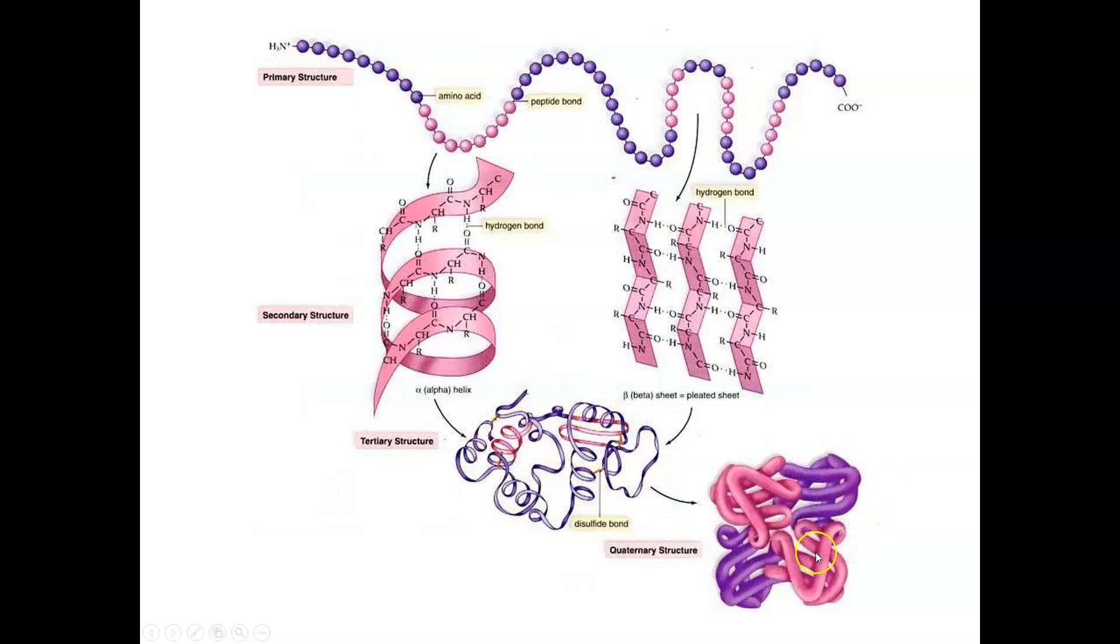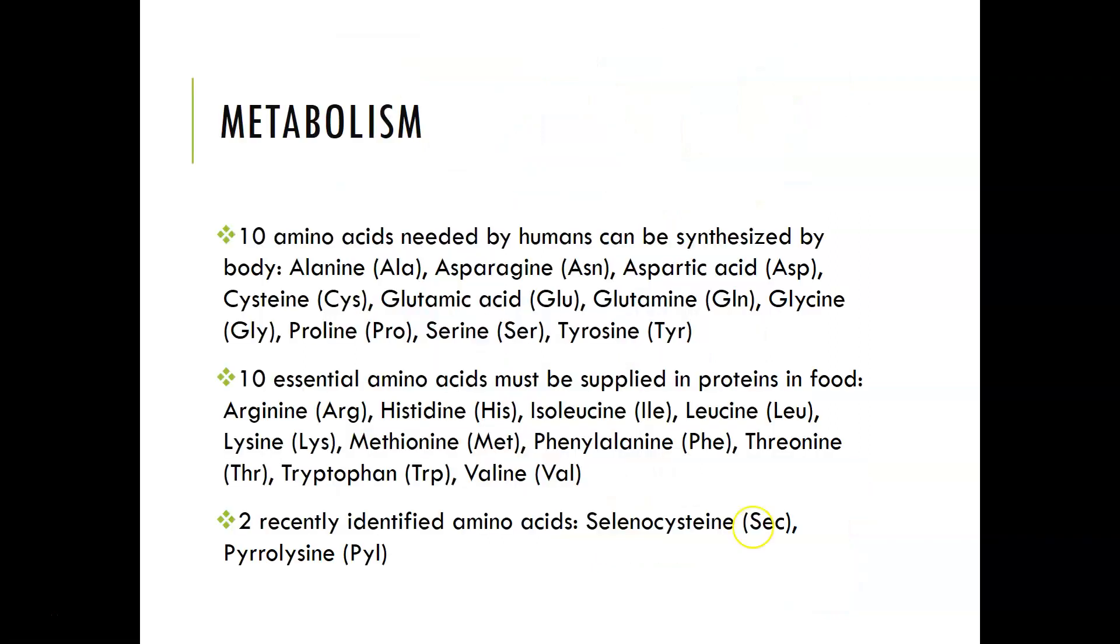But some proteins will have a quaternary structure. Hemoglobin is an example here. That's because it's basically four proteins linked up together to make the heme molecule, with two alpha and two beta globulin chains that link up. So that's a quaternary structure.